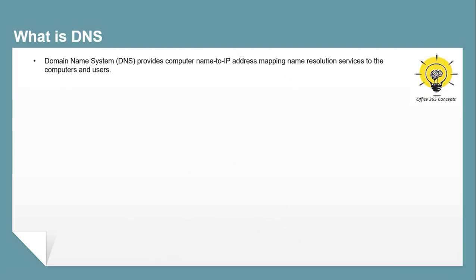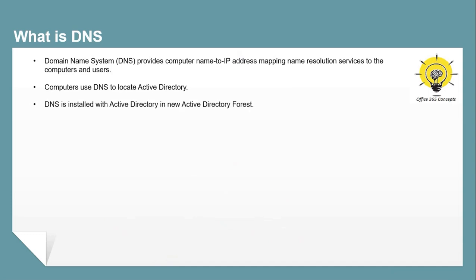When an Active Directory operation is performed — for example, authentication, updating or searching a resource — computers use DNS to locate Active Directory domain controllers. Even domain controllers use DNS to locate other domain controllers within your domain. DNS is a server role you can install using Server Manager or Windows PowerShell. If you're installing a new Active Directory forest, DNS is automatically installed in the first domain controller of the forest.